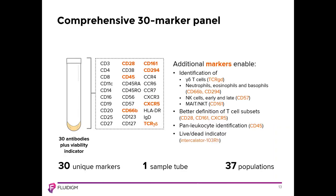The 30 markers contained in the assay tube were selected with input from industry-leading pharma companies, academic institutions, and build on the panels recommended by HIP-C. Markers colored in orange are those added which expand the numbers of cell populations identified by the HIP-C panel, including gamma-delta T cells, granulocytes, early and late NK cells, and NK T cells. CD28, CD161, and CXCR5 allow for better definition of T cell subsets. CD45 is included for pan-leukocyte identification, and the intercalator 103-rhodium is used for live-dead discrimination.